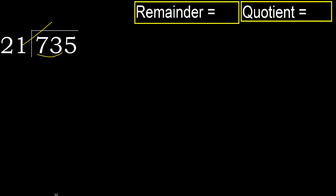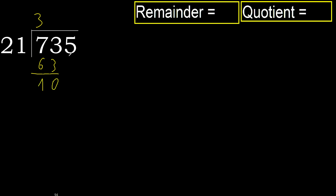but not greater. 21 multiplied by 4 is greater. Multiplied by 3, 63 is not greater. Subtract: 73 minus 63 is 10. Next.